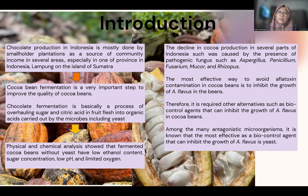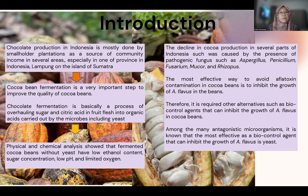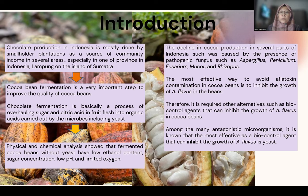The effect of yeast — the most effective — is to avoid aflatoxin contamination in cocoa beans. The yeast can inhibit the growth of Aspergillus flavus. Among the many antagonist microorganisms, the most effective control agents that can inhibit the growth of Aspergillus flavus is yeast. The purpose of this research is to find yeast from fermented cocoa beans with the potential for antagonistic activity against Aspergillus flavus for producing aflatoxin.